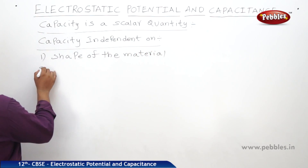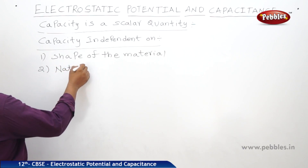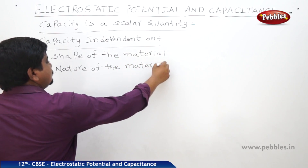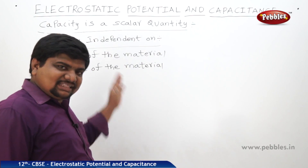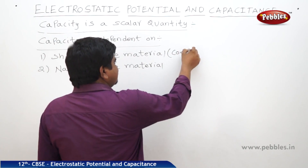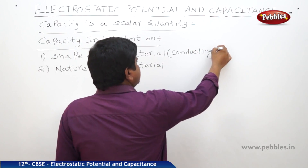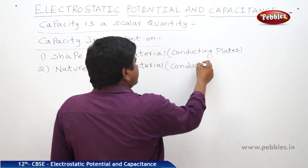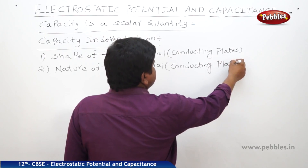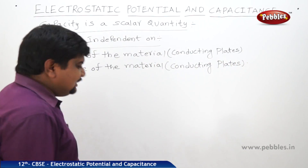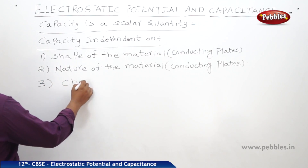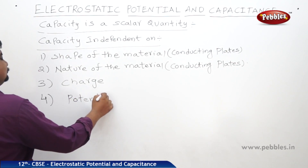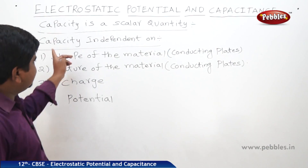The first independence factor is the shape of the conducting plates. The second is the nature of the material of the conducting plates. The third and fourth are that capacitance is independent of the charge and the potential. These four are the factors where capacitance is independent.